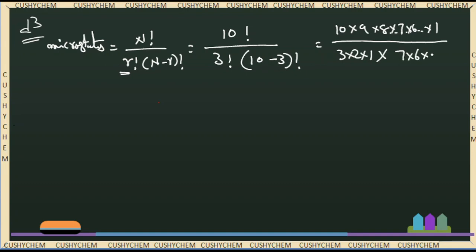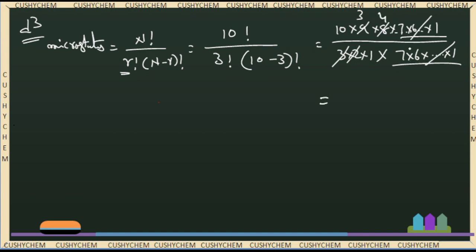So, 3! = 3 × 2 × 1, and 7! = 7 × 6 × 5 × 4 × 3 × 2 × 1. The 7! terms cancel. Then we cancel: the 2s, the 3s cancel, 4 and 8 cancel. After simplification, the numerator becomes 10 × 4 × 3, giving us the d3 configuration number of microstates = 120.